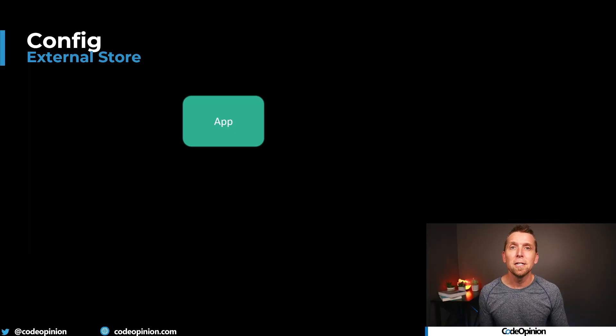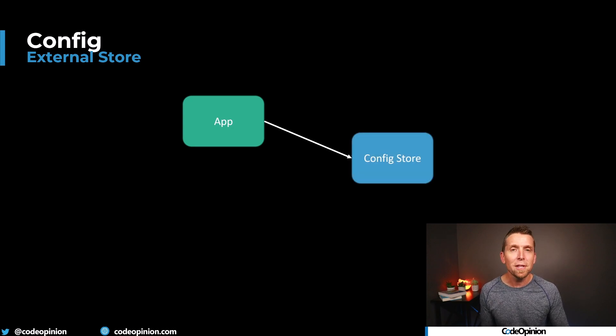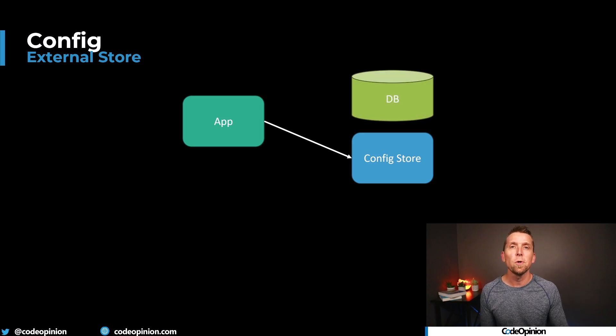That's when you might want to look at an external configuration service. When your application starts up based on its environment, it can reach out to that configuration store to get something like a connection string. That sensitive data isn't in a local configuration file or an environment variable — it's in a secured configuration service. And for dynamic data, your application — not just at startup but on some interval — could pull that configuration service to get updated values. Depending on the tooling, it might push updated values to you when something changes.